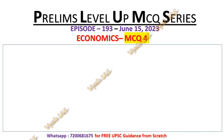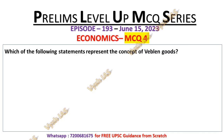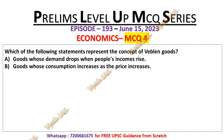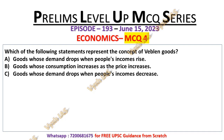Move on to MCQ number 4. Which of the following statements best represents the concept of Veblen goods? A: Goods whose demand drops when people's income rises. B: Goods whose consumption increases as the price increases. C: Goods whose demand drops when people's income decreases. D: All are incorrect. I will give you 10 seconds to try to answer this question.